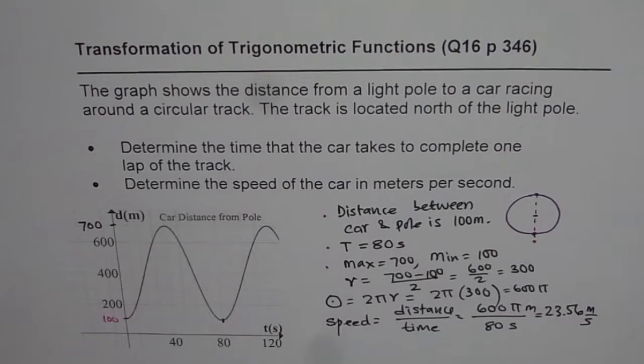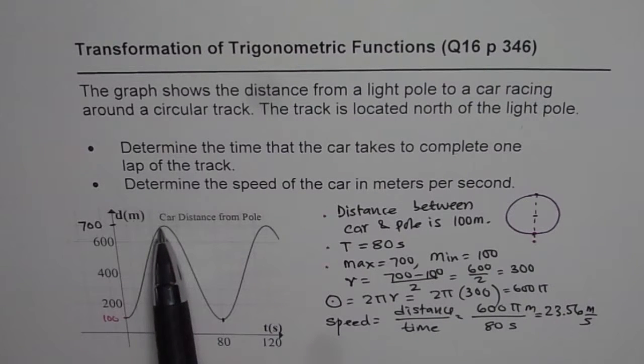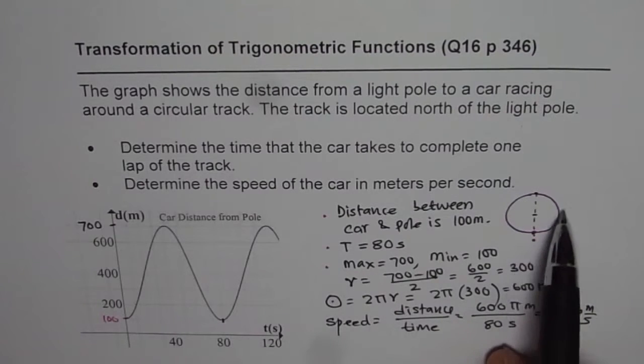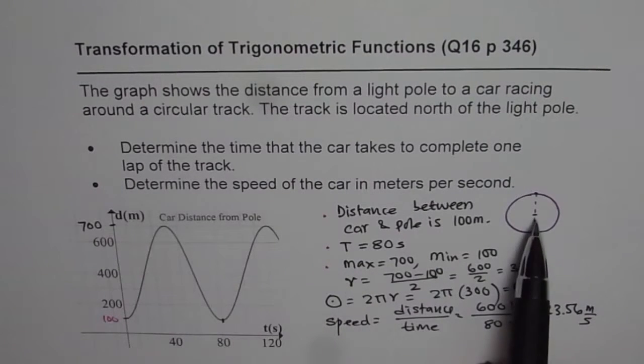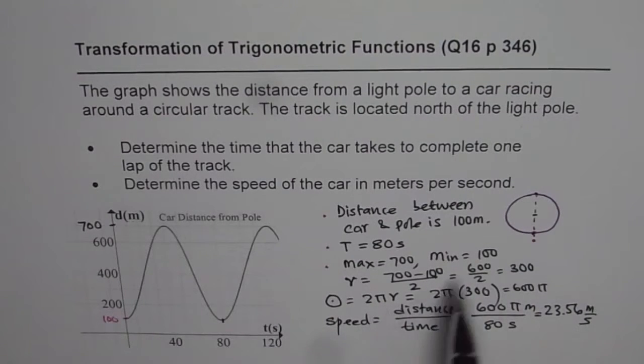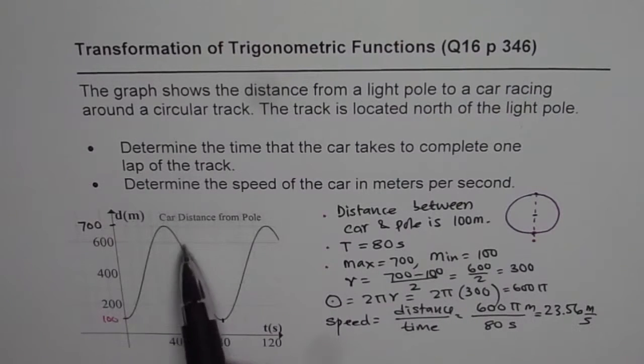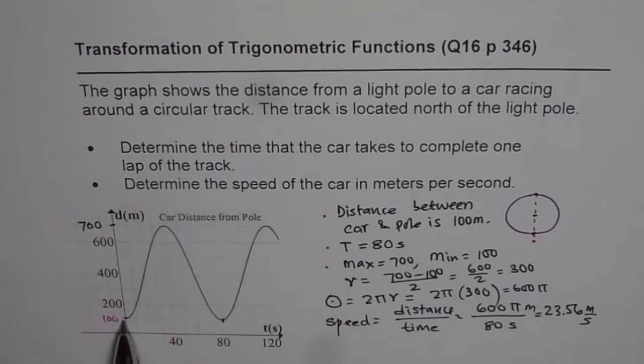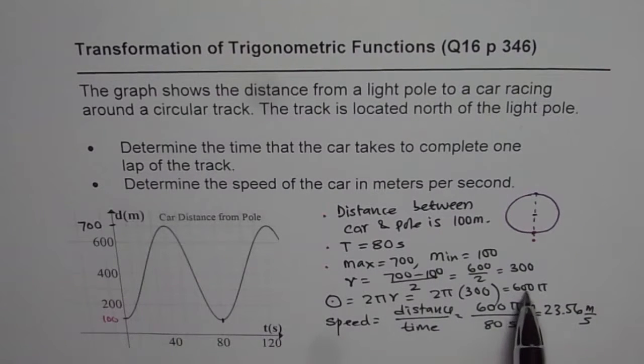So now, let us see what we really did. From the graph, we can say that the initial distance of the car is 100 meters, maximum distance is 700 meters, and therefore, the diameter of this track is 700 minus 100, which is 600, or the radius is half of it, which is 300. Circumference is 2 pi r, that is the distance covered during one full cycle, or the time taken to complete one circle along the track. So for the lap, the time taken is 80 seconds. We divide that distance by 80 seconds to get the speed, which is approximately 23.5 meters per second. I hope that helps.